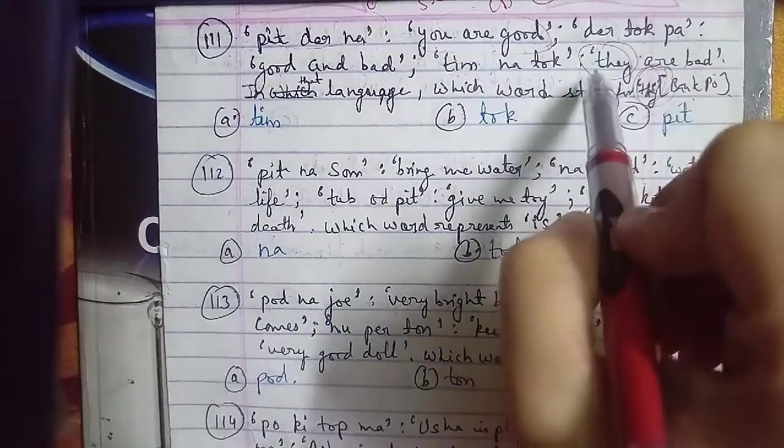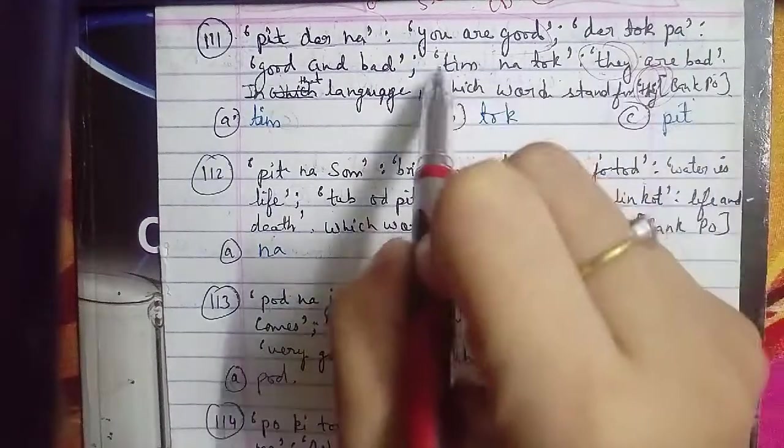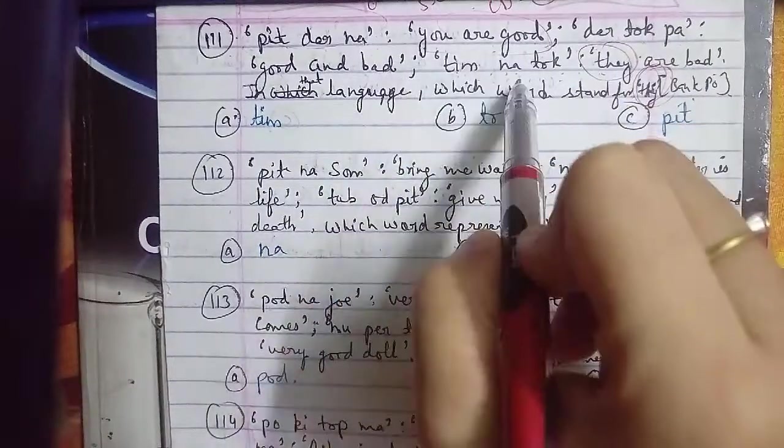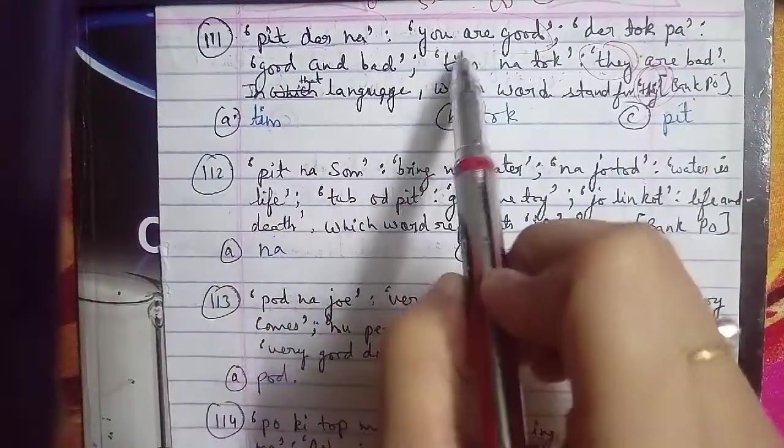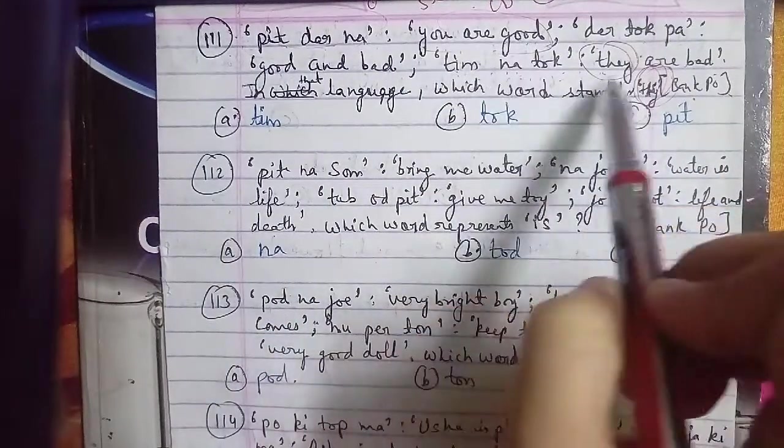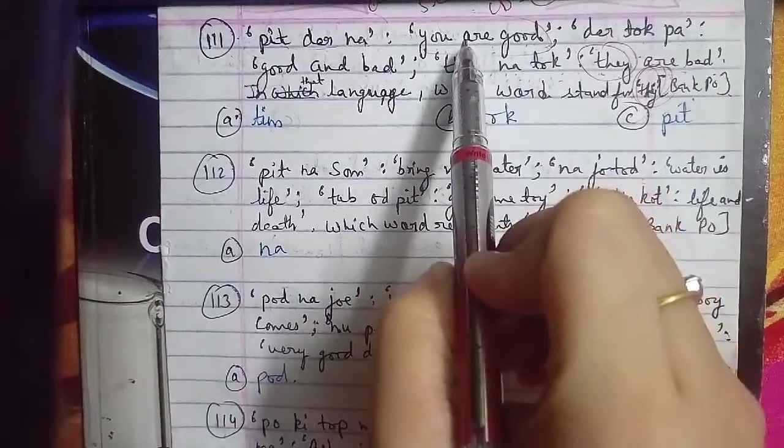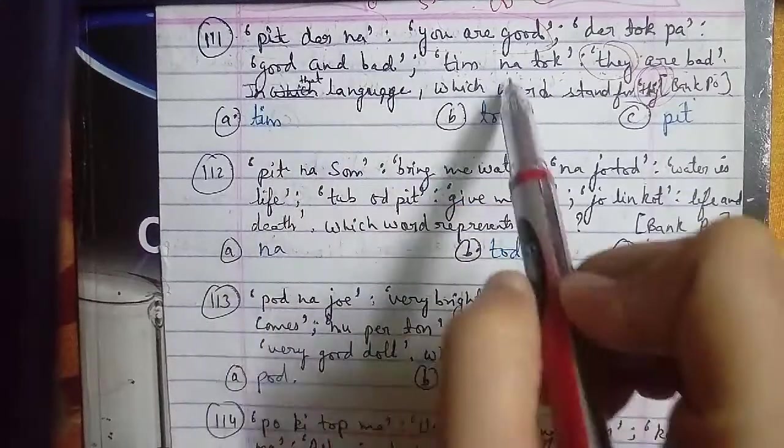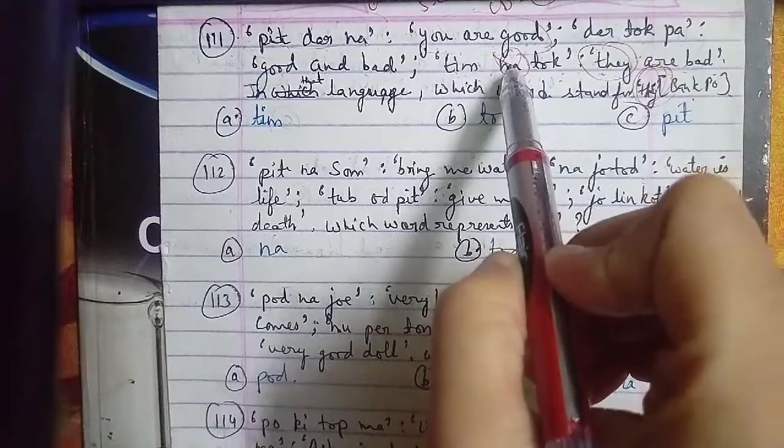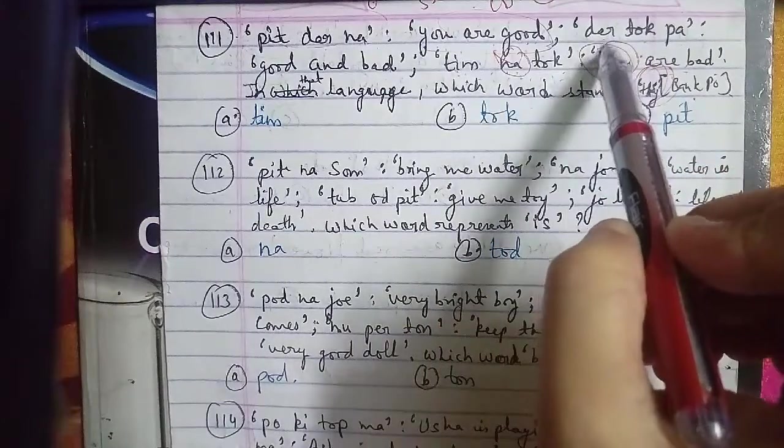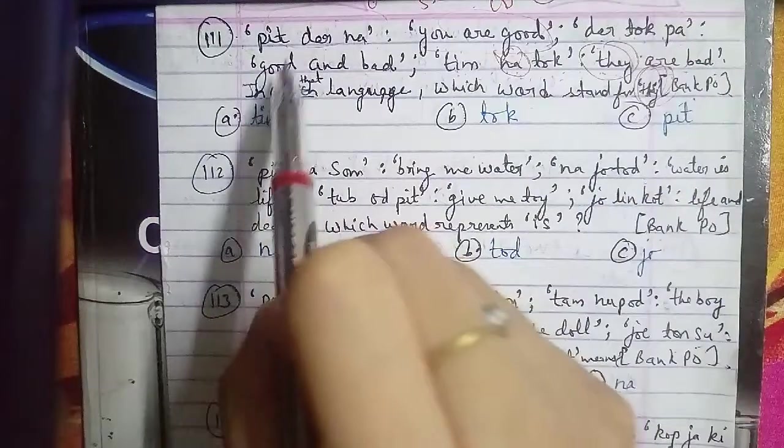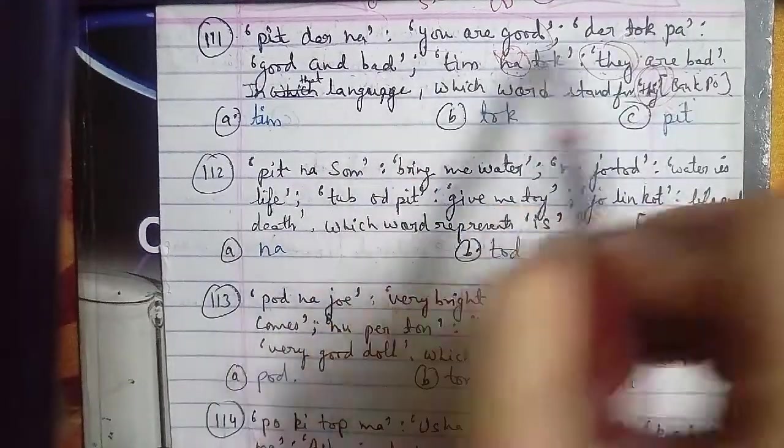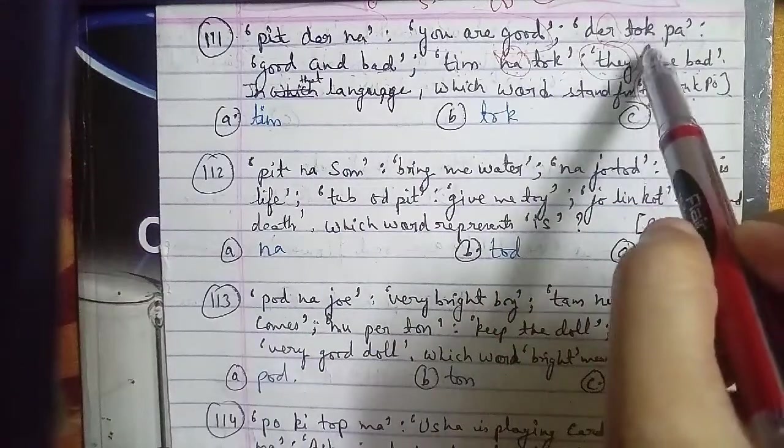Option A is tim, option B is tok, and option C is pit. We need to find the coding of deh. Looking at where deh appears - it's not in 'you are good'. We need to find which word doesn't appear in both. Pit der nam won't be it because this is coded for 'ar'. Since tok is not included here, the code for deh will be tim. So tim is the right answer and option A is correct.